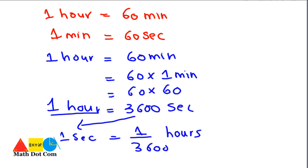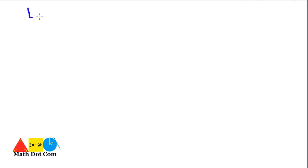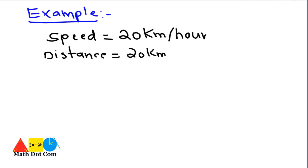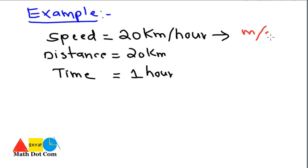This is how you can convert these units from one to another — seconds to hours, hours to minutes, and minutes to seconds. Now let's have an example where you are asked to convert speed from kilometers per hour to meter per second. If a car is moving and the speed is 20 kilometers per hour, that means the distance is 20 kilometers and the time is one hour.